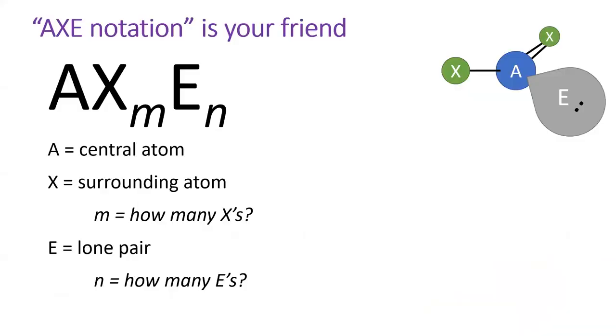One final thing will help you in the next section, AXE notation. Unfortunately, your textbook does not utilize AXE notation, which is just really dumb. Each of the letters, A, X, and E, stand for something in the molecule, as shown in the image.